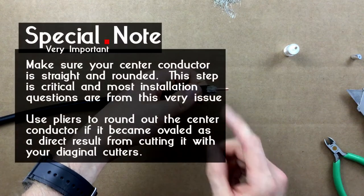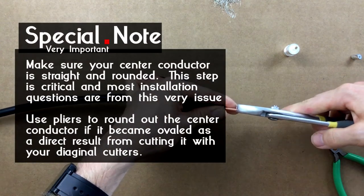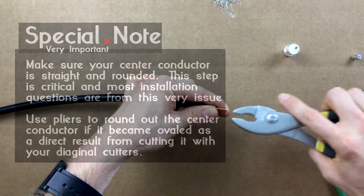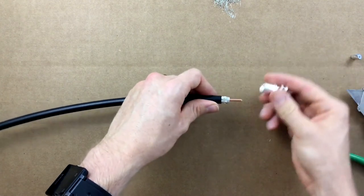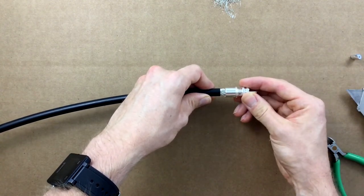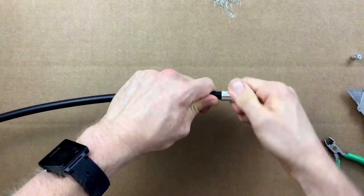Be sure the center conductor is straight. Grab your PL259 inner body, and with a twisting motion to the right or clockwise, begin to thread it onto the coax.